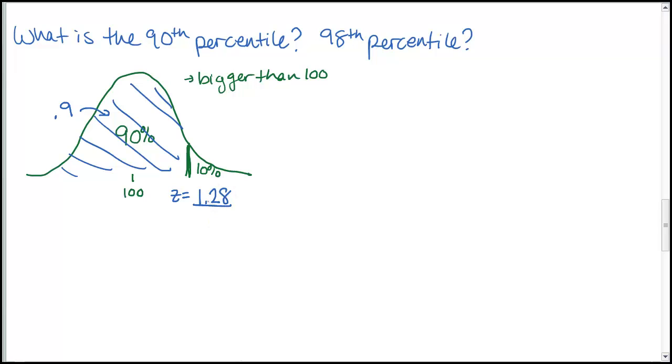Now 1.28 is not an IQ score, so we have to now convert this to an IQ score. So we're using the same formula. We know that the z-score is 1.28. We don't know our IQ score, but we still know the mean and the standard deviation. So here you're going to have to actually solve for x.